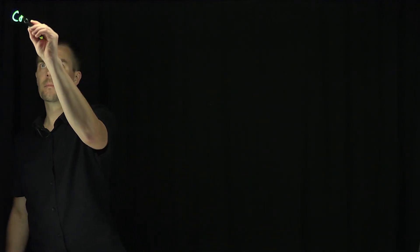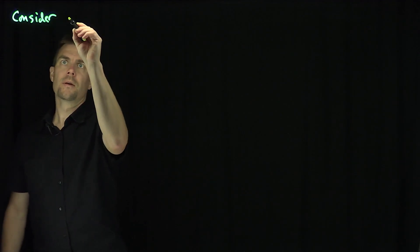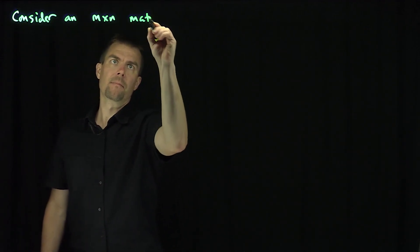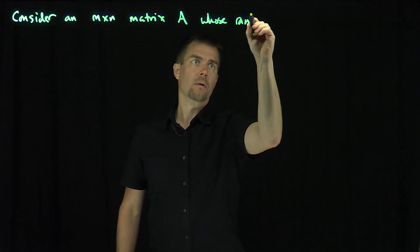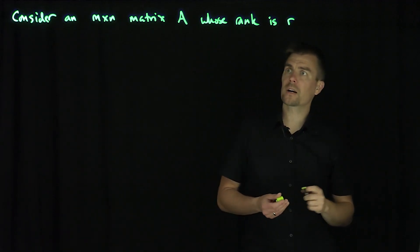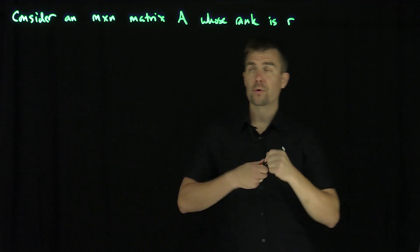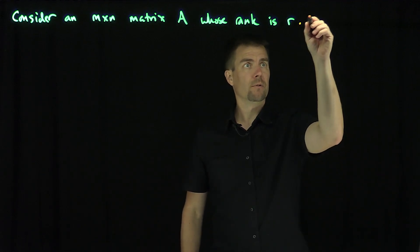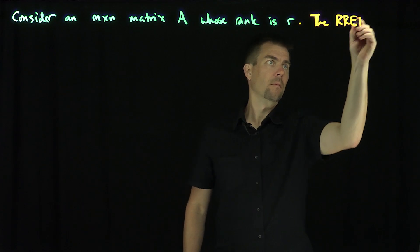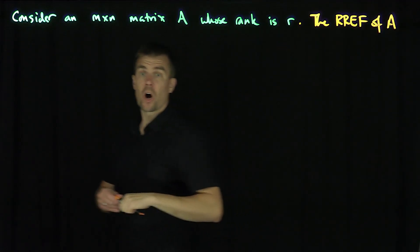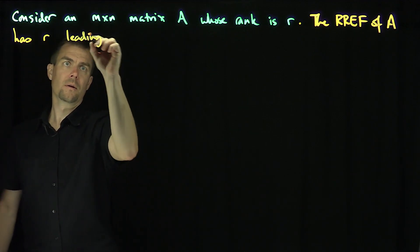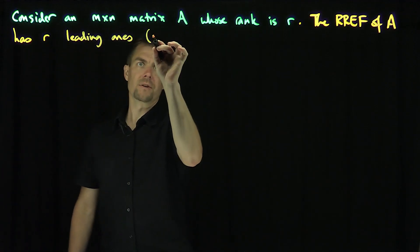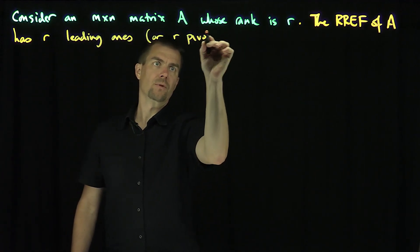Hello, students. In this video, we'll discuss the Smith Normal Form of a matrix. Let's consider an M by N matrix A whose rank is R. What rank R means is that when we do the reduced row echelon form of the matrix A, it has R leading ones, or R pivots. That's what it means to be rank R.